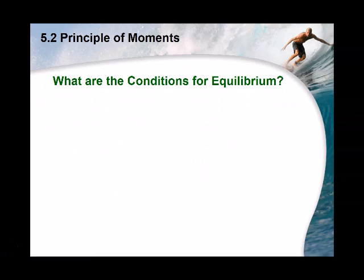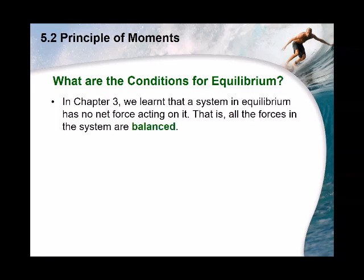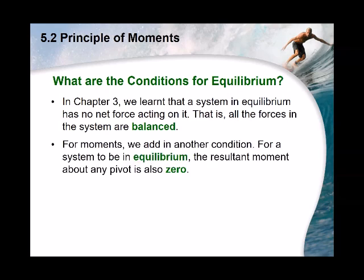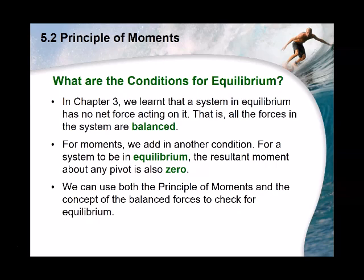For an object to be in equilibrium, two conditions must be satisfied. First, there is no net force acting on the system — the forces are balanced. Second, the resultant moment about any pivot is zero, meaning the sum of clockwise moments equals the sum of anti-clockwise moments.